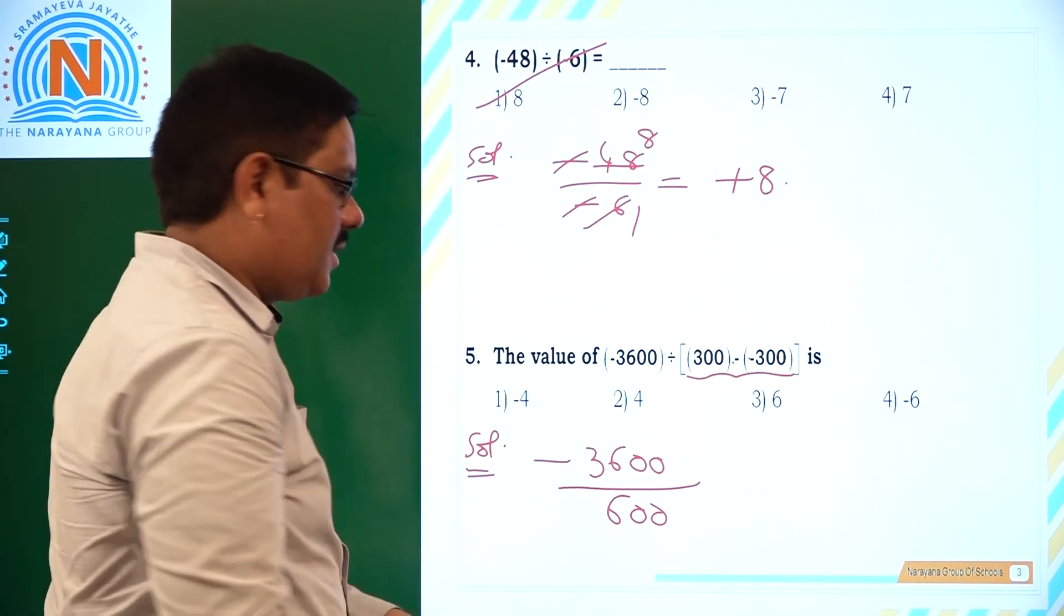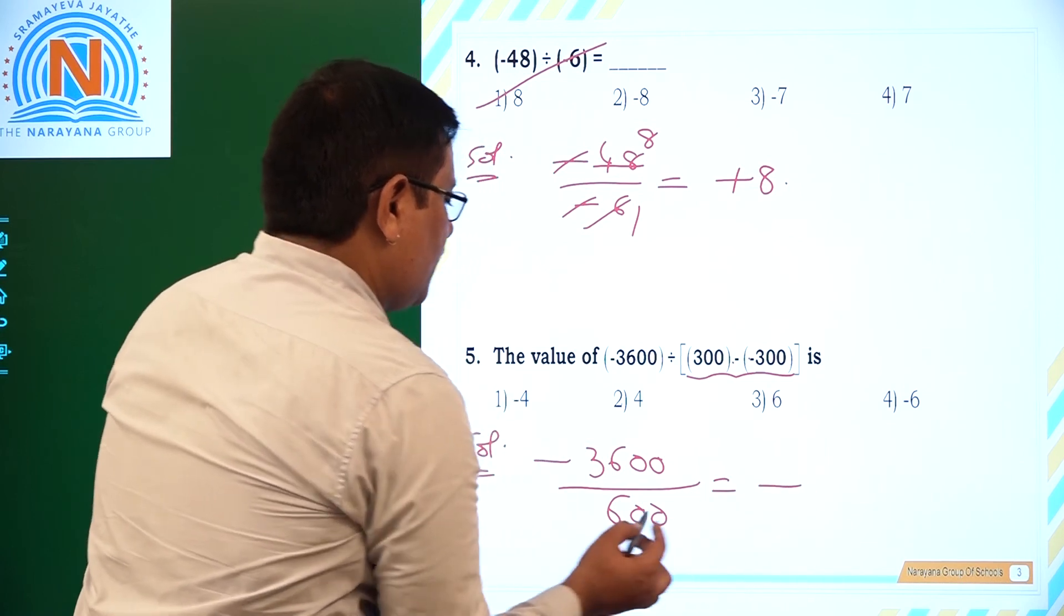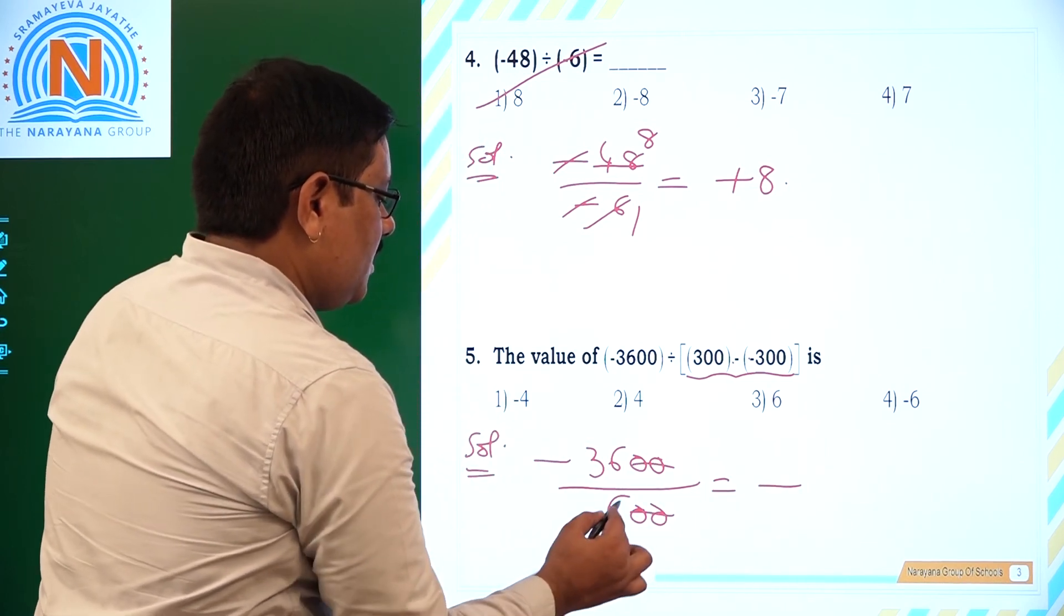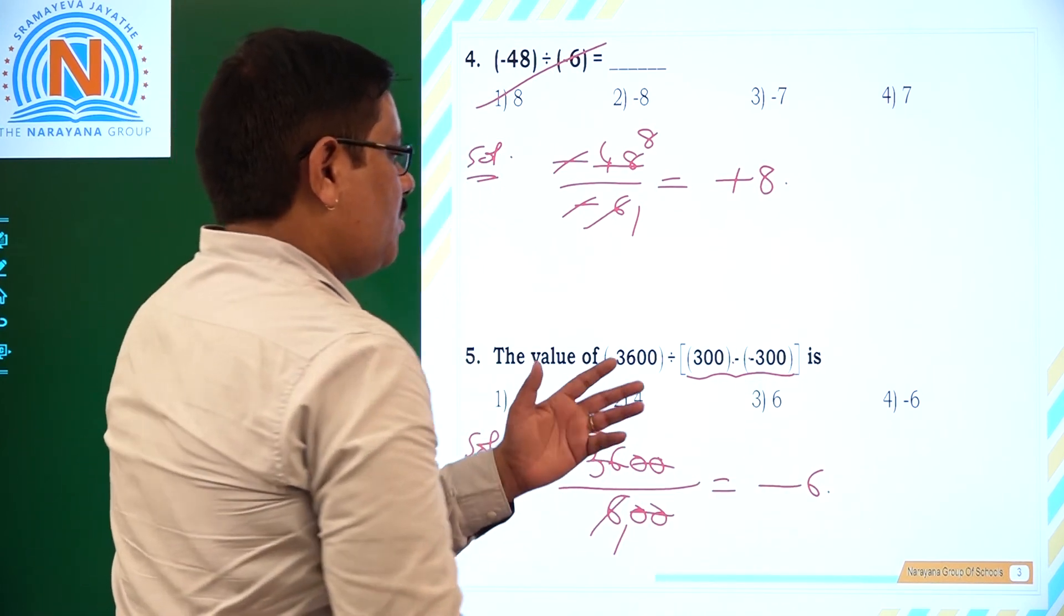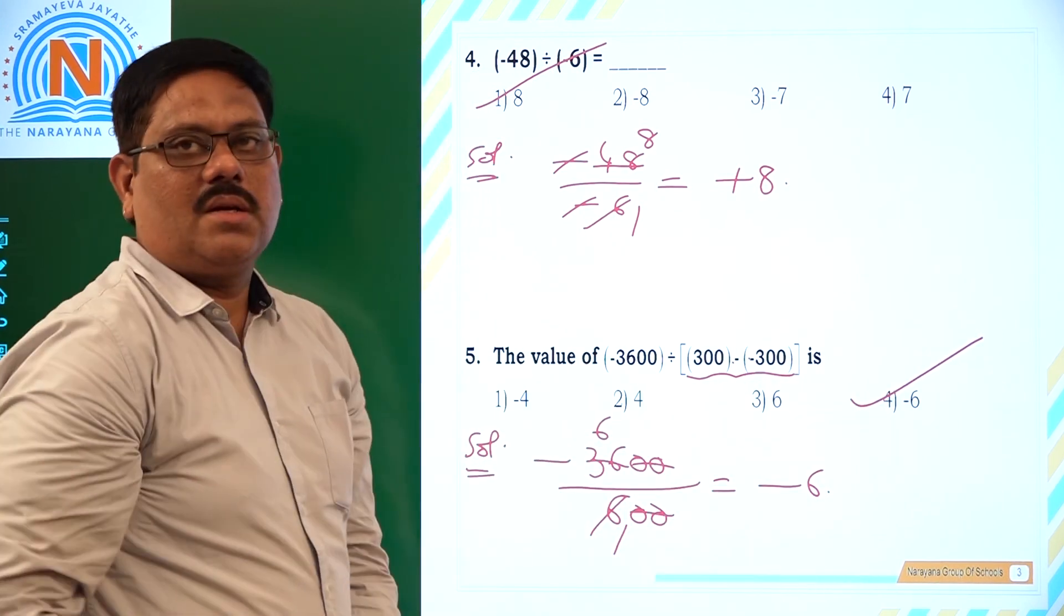So minus 3600 by 600. See, two zeros cancel. So minus 6 is the answer for this. What is the right option here? Fourth option is the right answer.